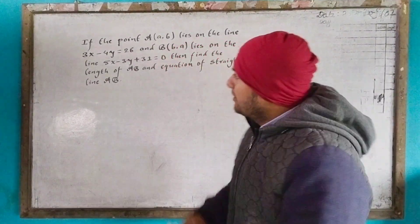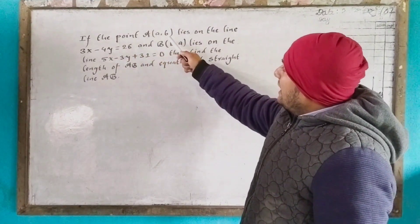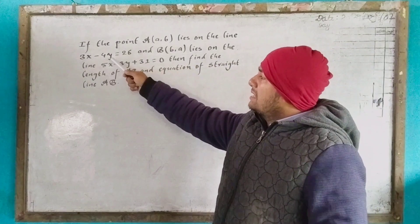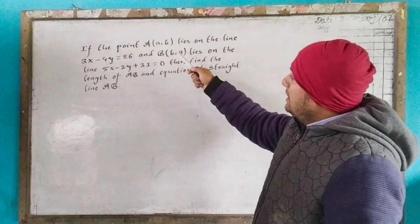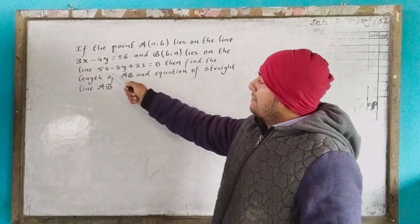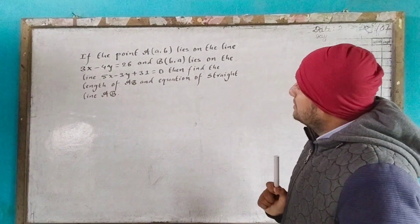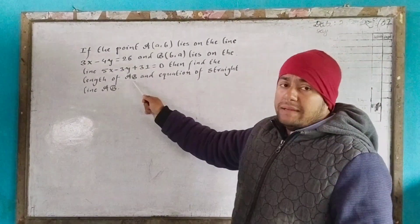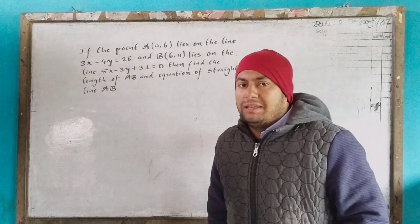The question is: if the point A lies on the line 3x - 4y = 26, and B lies on the line 5x - 3y + 31 = 0, then find the length of AB and the equation of the straight line AB.